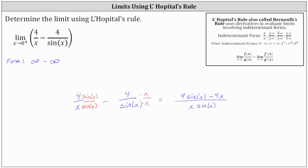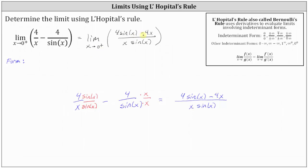This means the given limit is equal to the limit as x approaches 0 from the right of 4 sine x minus 4x, divided by x sine x. Now let's check the form of this limit. As x approaches 0 from the right, 4 sine x minus 4x approaches zero minus zero, or zero. And x times sine x approaches zero times zero, which is also zero. So by determining the difference, we now have a limit in the indeterminate form 0/0, where we can apply L'Hôpital's rule.